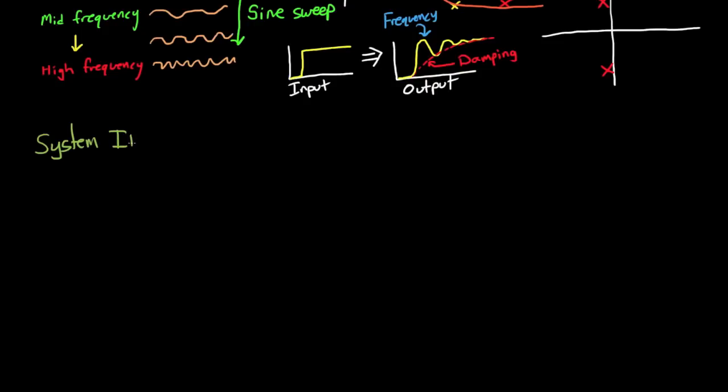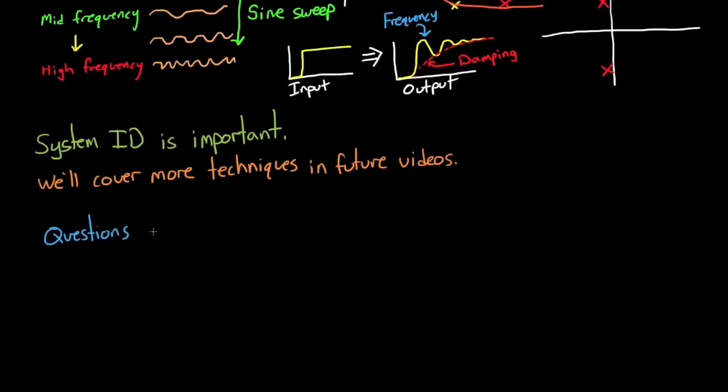So now in this video I've showed you a couple different methods of how we go about identifying a system. And this is really important because having a good model of your system is crucial for designing a good control system. And we'll cover a few more techniques as we evolve in these videos and start talking about designing control systems. But at least now hopefully you have a little bit better understanding of the process for system identification. Of course, as always, if you have any questions or comments, please leave them in the section below. And as always, thanks for watching.